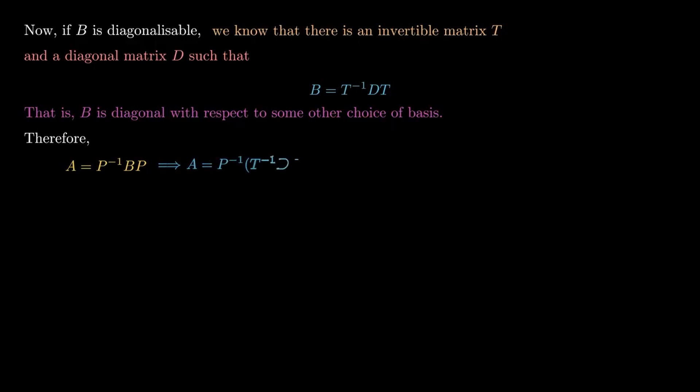But since the inverse of TP is P^(-1)T^(-1)—when you invert the product of two matrices, you have to flip the order—we can see that A = (TP)^(-1)